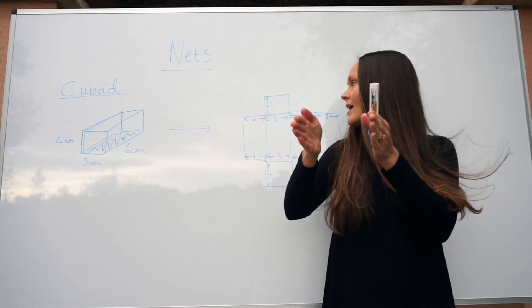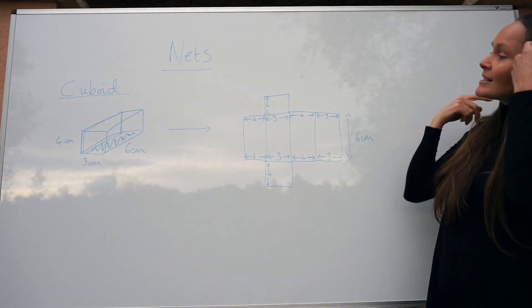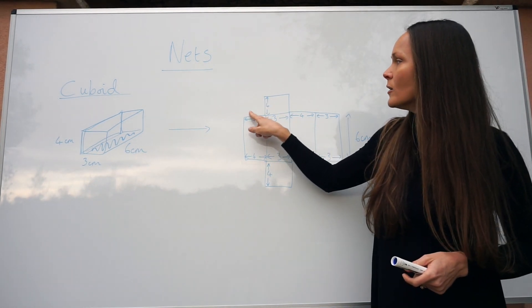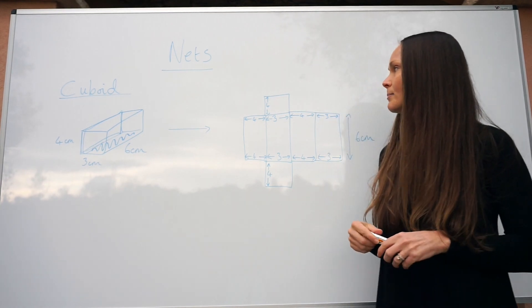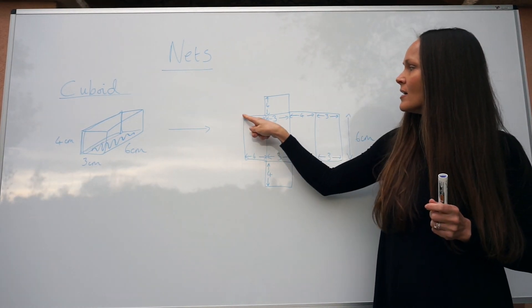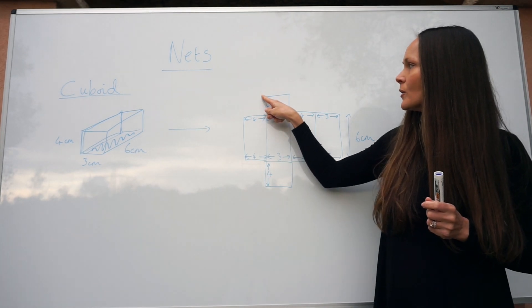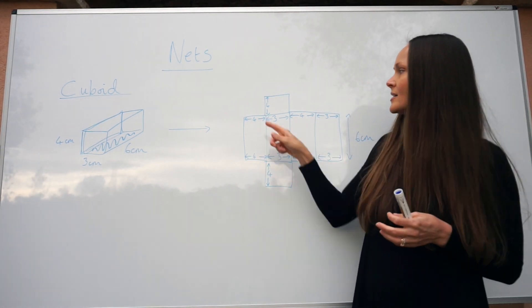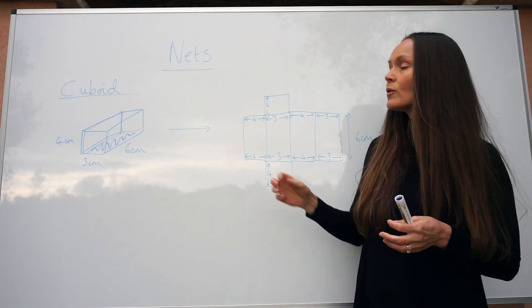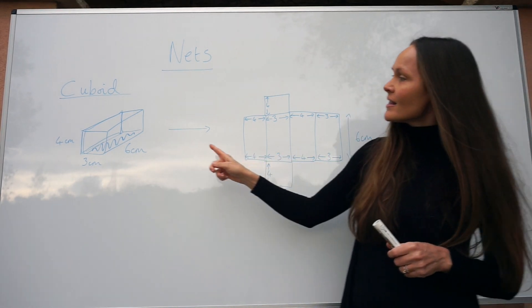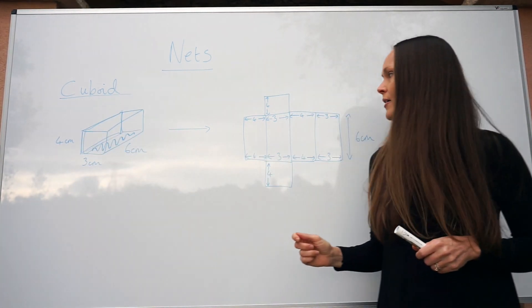Notice how these lengths here, four and four, they're the same. This is really important. When you fold those pieces back together, this should be in line with this edge, so they have to be the same length. If when you draw your net this is three and this is four, that's incorrect and you can lose marks.